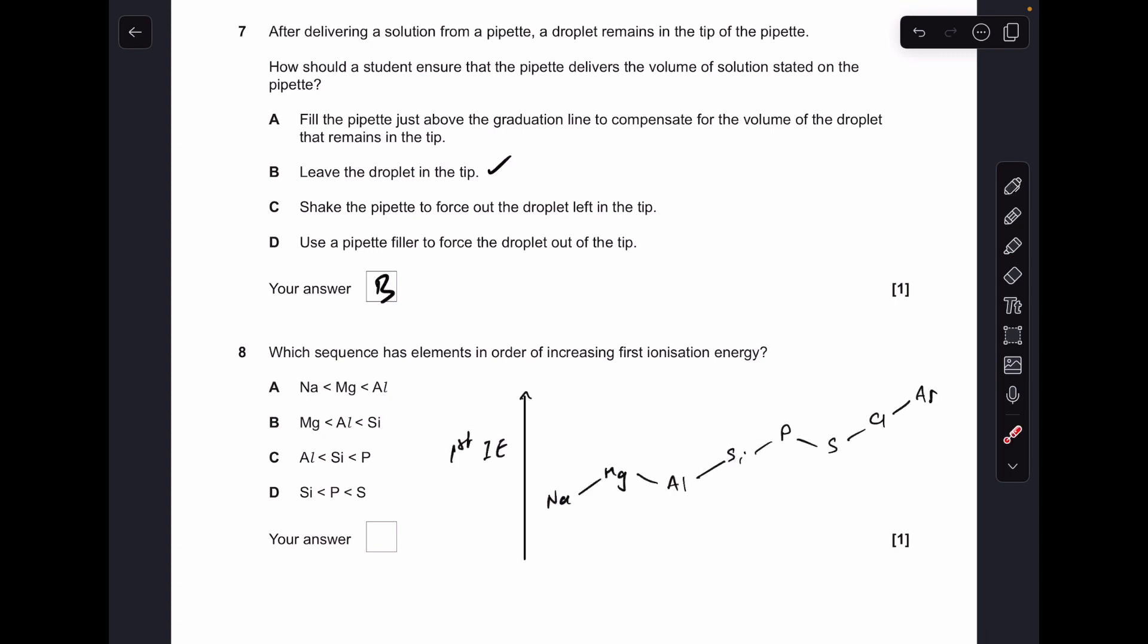Moving on to number eight. This is testing our knowledge of the period three trend in first ionization energy. Remember you've got the general increase as you go across the period, but you've got these two rogue ones. Aluminium drops slightly because you've got the first electron in a slightly higher energy P subshell, and for sulfur it drops again because you've got that first paired electron in a P orbital.